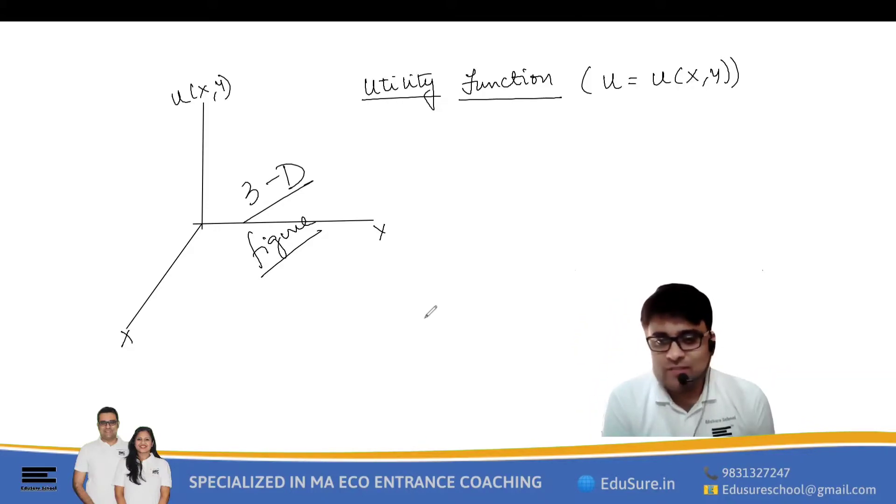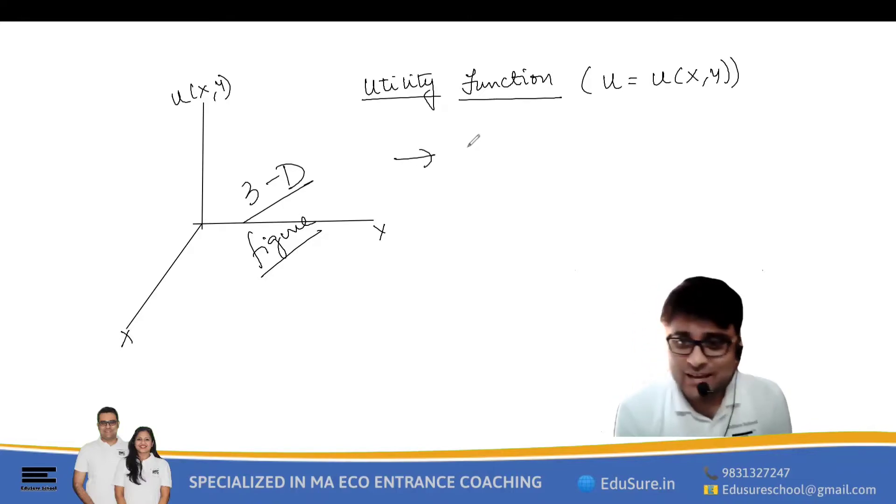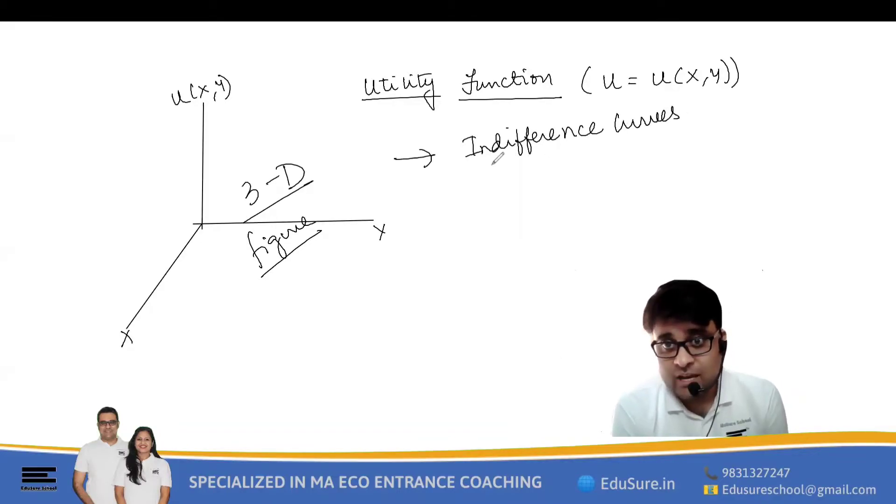Since they did not want to work with a 3D figure—drawing a 3D figure on a plain paper is not very simple—we need 3D graphing. Hence the economists took out a very important hack. They took out a hack which basically gave birth to a concept called indifference curves. So the economists did not want to work with a 3D diagram, so they came up with a very interesting concept called indifference curves.